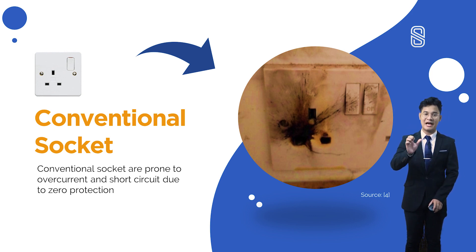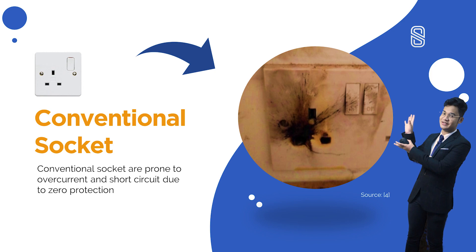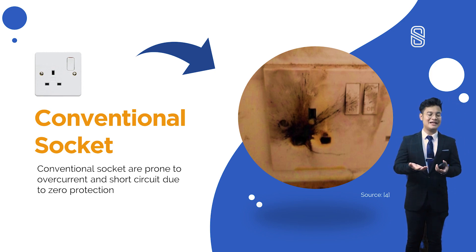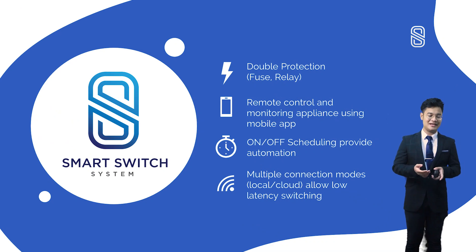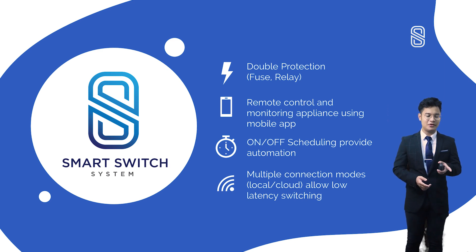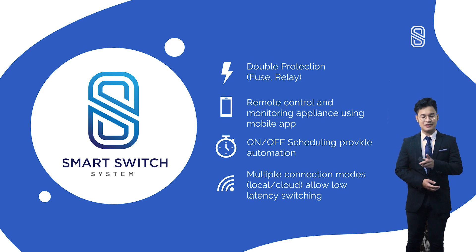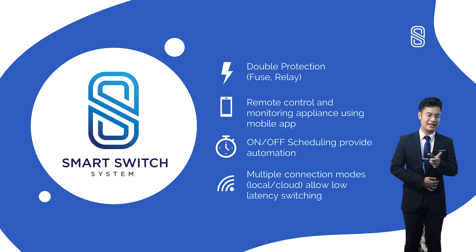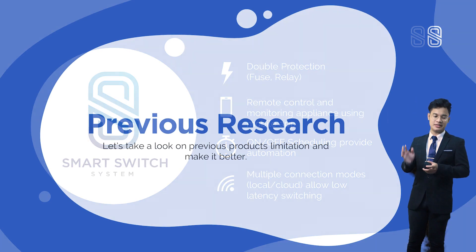If the fuse happens to fail, you can have a fire at your home. That's why we want to convert to the smart socket — my smart switch system — which has double protection using fuse and relay. We can also remotely control and monitor appliances using a mobile app. We have an on/off schedule that provides automation to save users' time. We also have multiple connection modes — local and cloud — that allow low-latency switching.